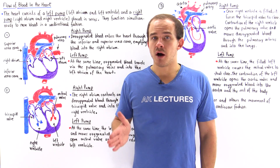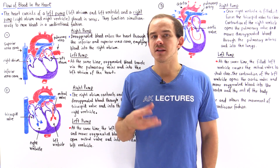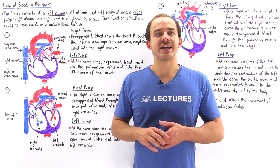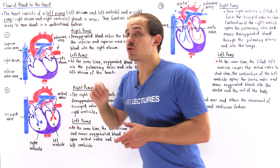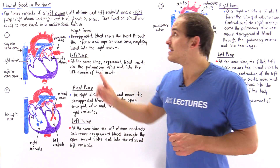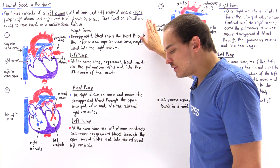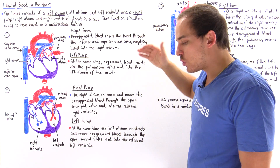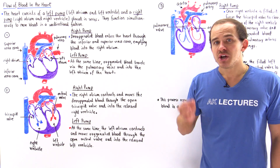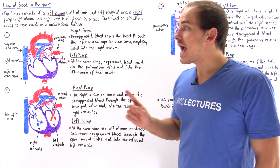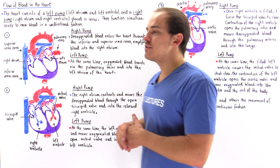The human heart consists of two different pumps: a right pump and a left pump, each consisting of two different chambers — an atrium and a ventricle. These two individual pumps are placed in series with respect to one another, meaning they work together in a simultaneous way to create a movement of blood that is unidirectional and continuous.